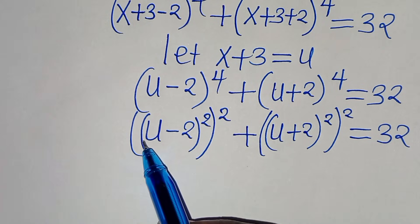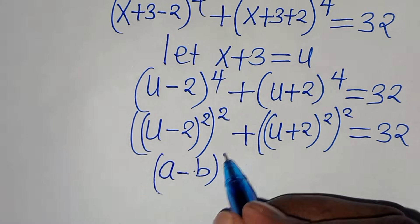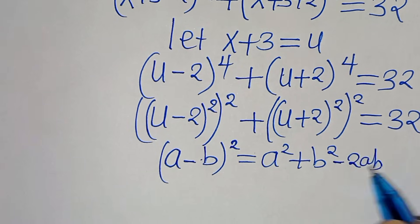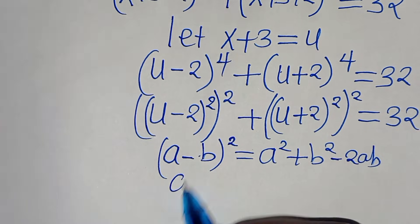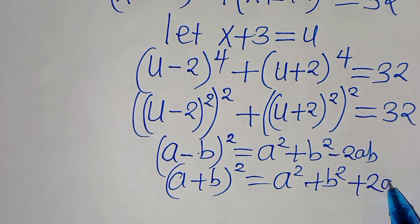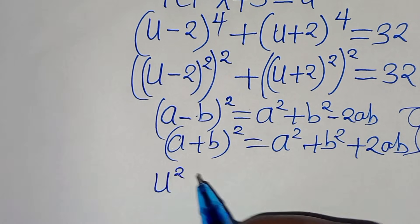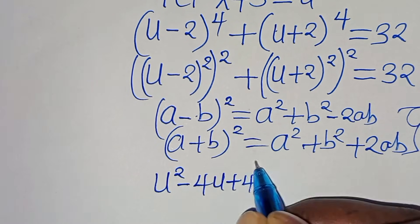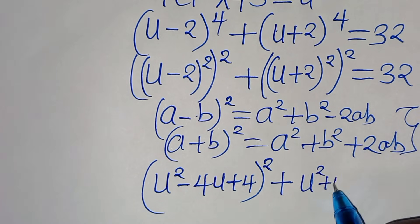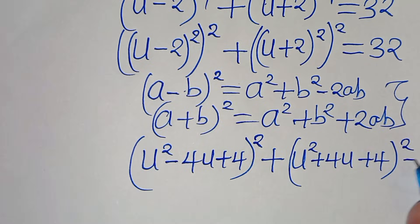The next step is to expand u minus 2 to the power of 4. We treat it as a squared form: u minus 2 to the power of 2 is u squared minus 4u plus 4, and u plus 2 to the power of 2 is u squared plus 4u plus 4. Applying this, we get u squared minus 4u plus 4, everything squared, plus u squared plus 4u plus 4, everything squared, equal to 32.